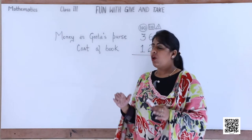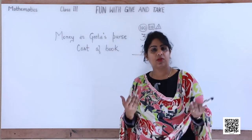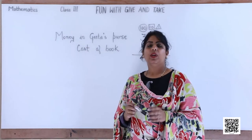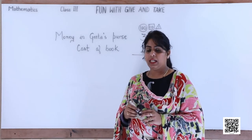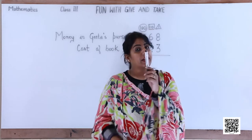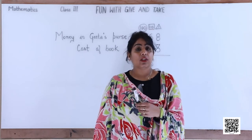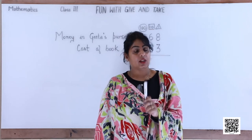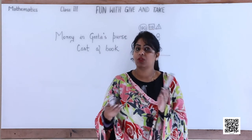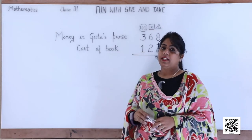Dear students, we always write the greater value above the smaller value. Why? Because we can subtract only the smaller number from the larger number — we cannot subtract the larger number from the smaller. For example, if I have two pens I can give you one, but if I have only one pen I cannot give you two. So that is why we always put the greater value above the smaller value.